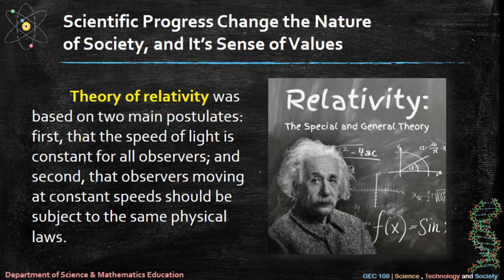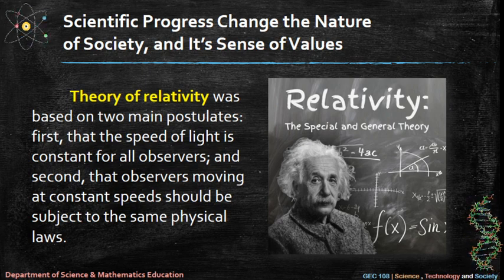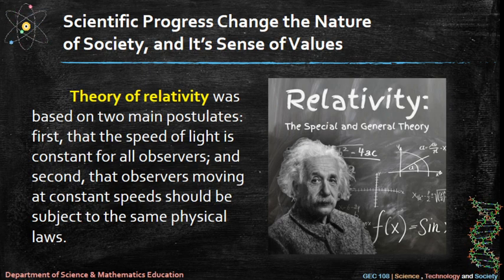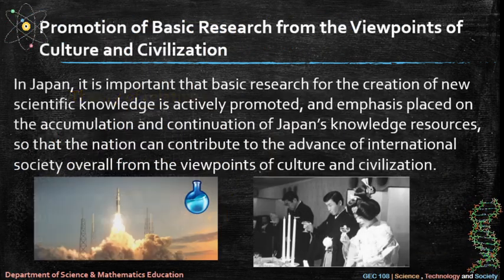The theory of relativity was based on two main postulates: first, that the speed of light is constant for all observers, and second, that observers moving at constant speeds should be subject to the same physical laws.